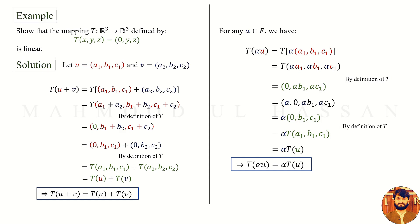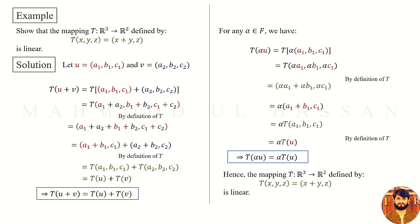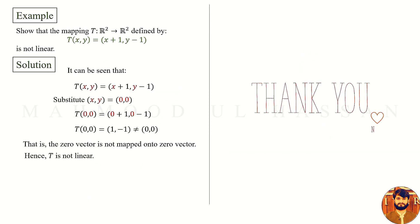Both conditions are clearly satisfied. Hence the mapping T from vector space R³ to itself defined by T of (x, y, z) equals (0, y, z) is a linear mapping. There is another example — try it yourself. Also, there is a third example where the mapping T is not linear.